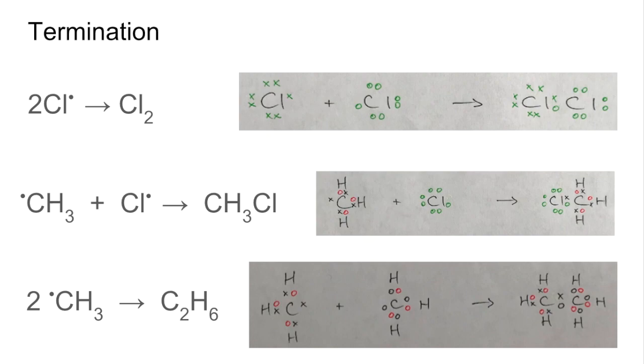So a common question on the exam is to suggest why the radical substitution method is not a good way to produce a single substance. And straight away you can see there are two possible organic products already on this set of slides. We've got chloromethane and ethane. And if the chlorine was in excess, we could continue to strip out the hydrogens one at a time via propagation steps.